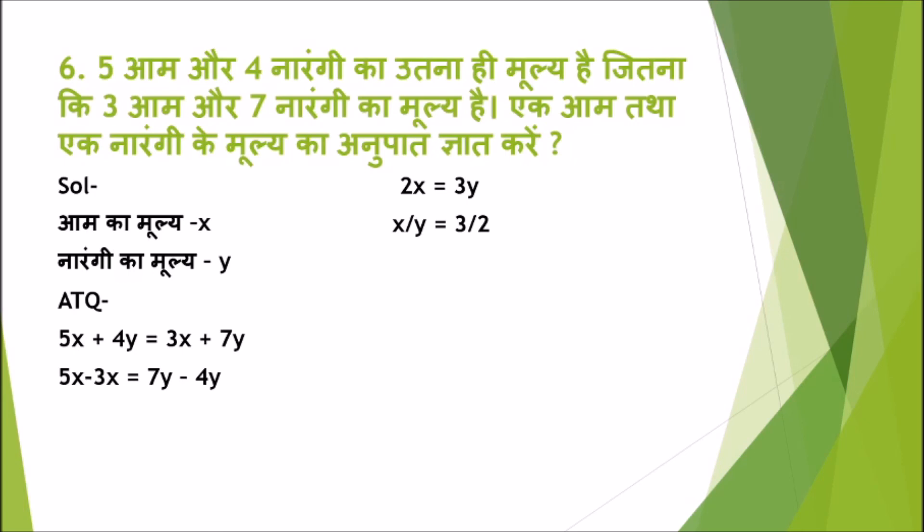और directly हमारे पास ratio आचुका है x:y = 3:2 — यही हमारा answer है। तो guys, आज की वीडियो में बस इतना ही। I hope आपको वीडियो पसंद आई होगी। वीडियो को like करें और अपने दोस्तों में share करें। इस तरह की वीडियो पाने के लिए हमारे channel के साथ जुड़ें। अगर आप इस वीडियो की PDF पाना चाहते हैं तो हमारे Telegram group से download कर सकते हैं — link description में मिलेगा। वीडियो देखने के लिए धन्यवाद, मिलते हैं अगली वीडियो में।